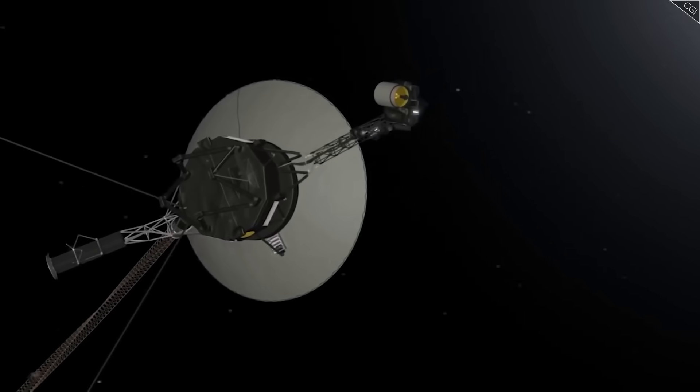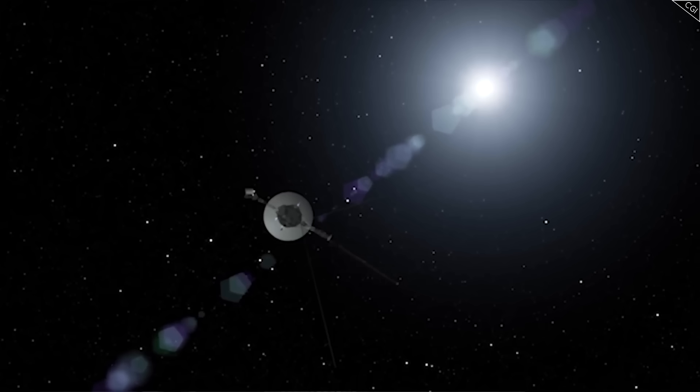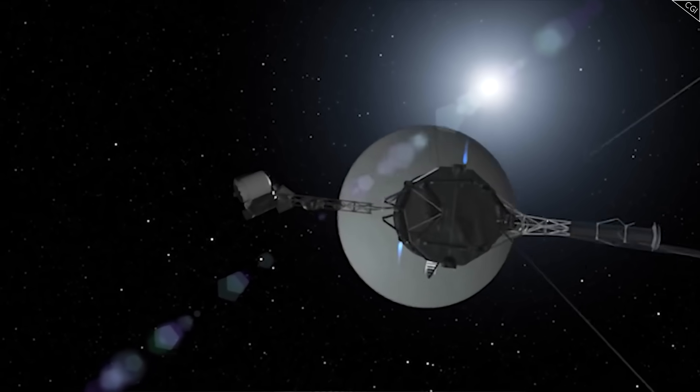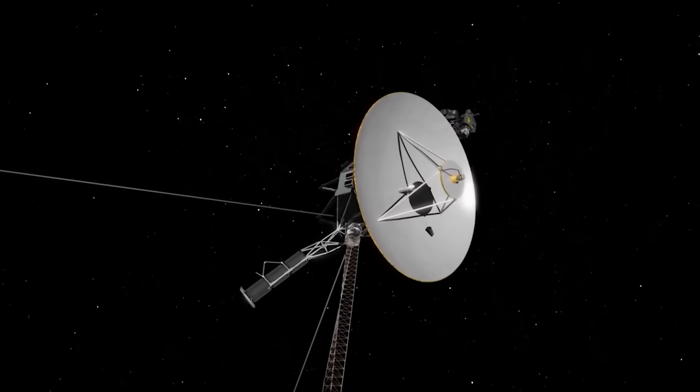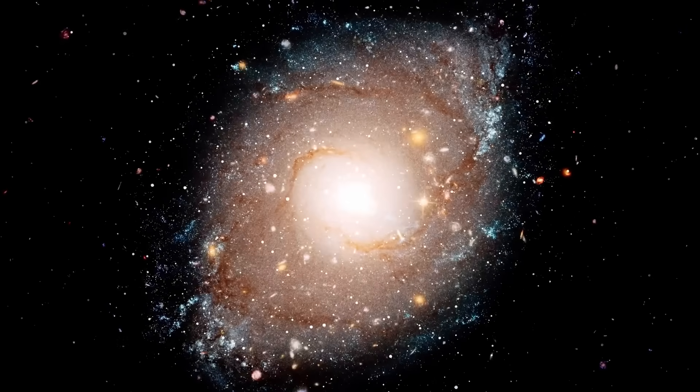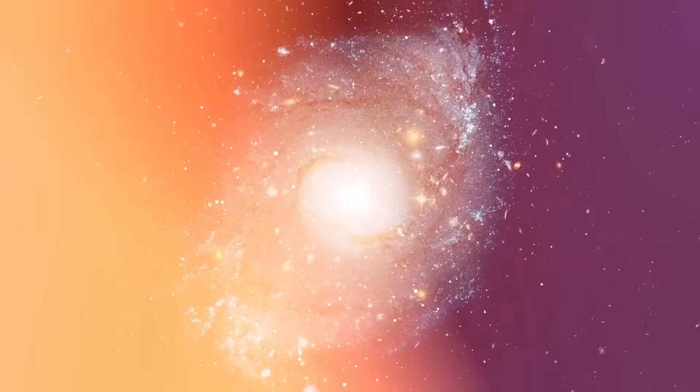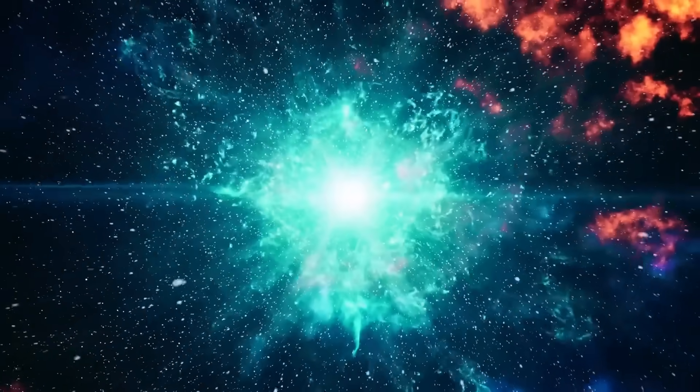Voyager wasn't just a messenger. It was a mirror. And in it, we didn't just find an image of space. We found the reflection of our place within it. So the next time you look up at the night sky, remember, somewhere beyond those stars, something looked back. And it didn't blink.